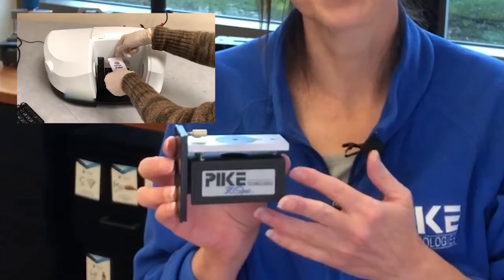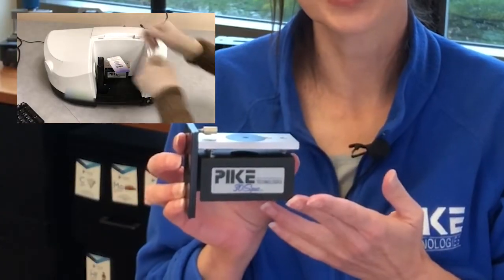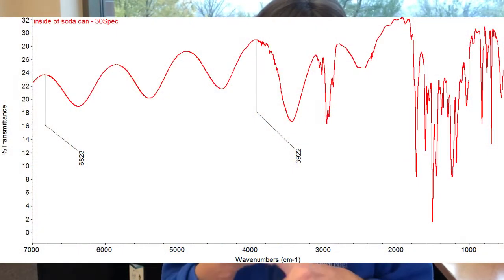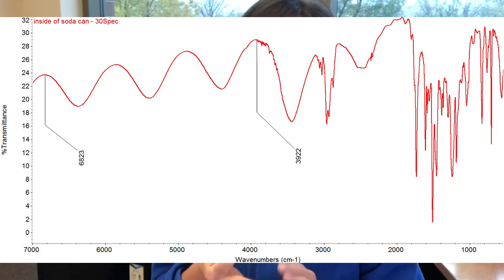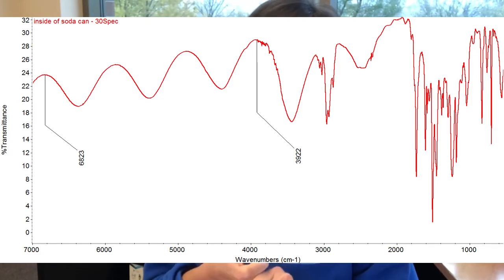I collected a spectrum of the inside of a soda can using our little 30-spec specular reflection accessory — it has a 30 degree angle of incidence. From the spectrum we learned that we could get chemical information, look at reflectivity, and look at the thickness of the coating.